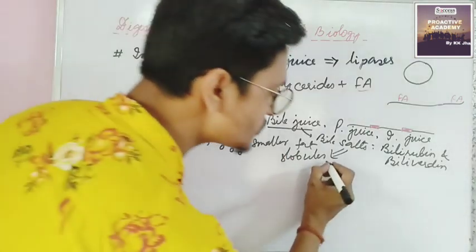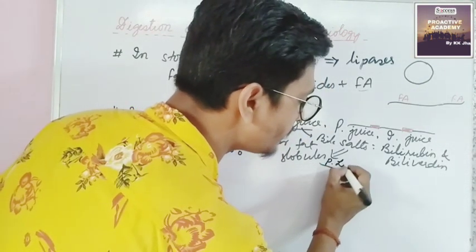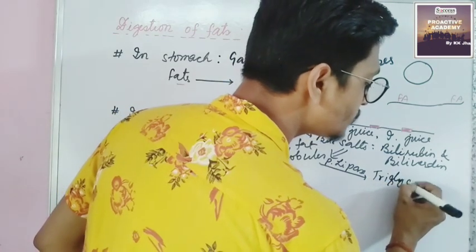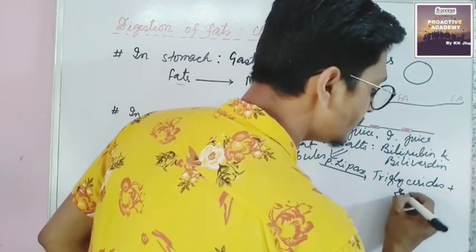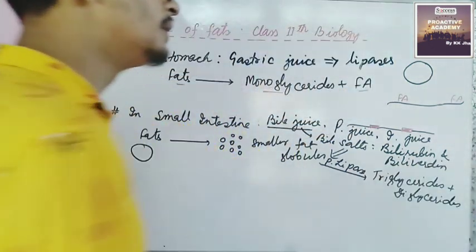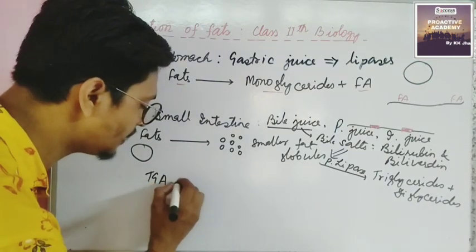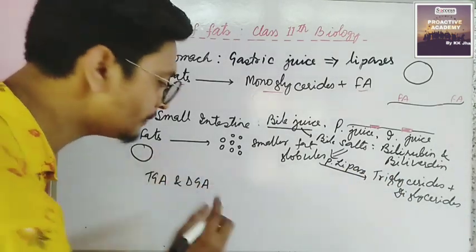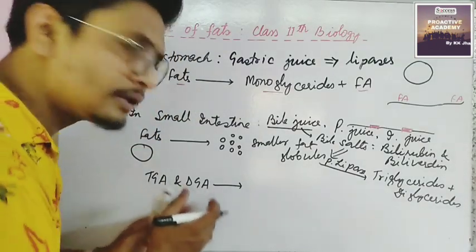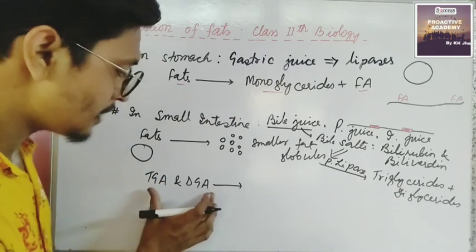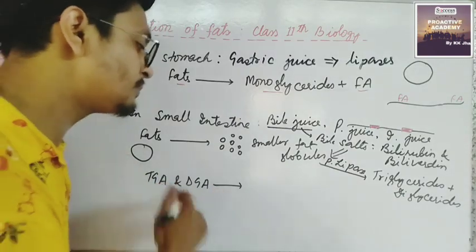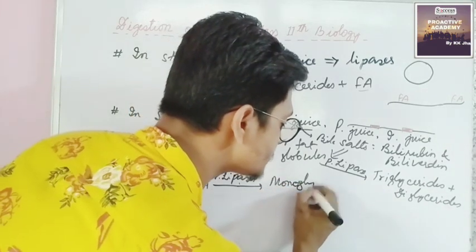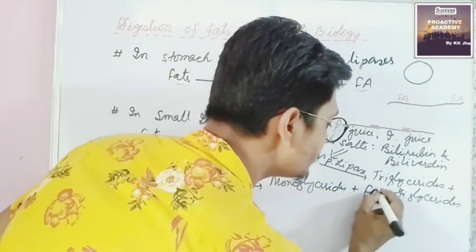Now, pancreatic lipase acts on these smaller fat globules and converts them into triglycerides and diglycerides — I use TGA for triglycerides and DGA for diglycerides as symbols (don't use these short forms in examinations). Then pancreatic lipase acts again on triglycerides and diglycerides and breaks them down into monoglycerides and fatty acids.